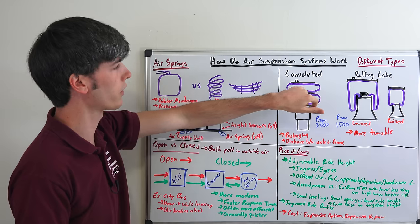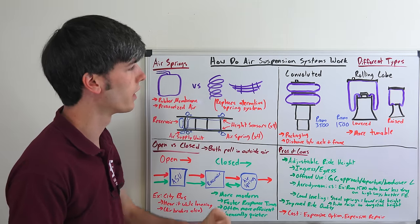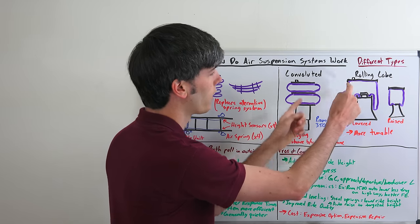The convoluted you can see here, it's kind of got that Michelin man look to it. You'll see these common in the aftermarket. On this rolling lobe you can kind of see the way it works. So as you add air, each of these will have a port likely on top to add air into the system.